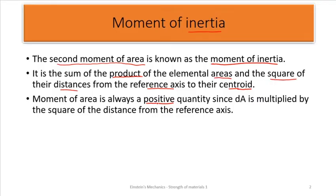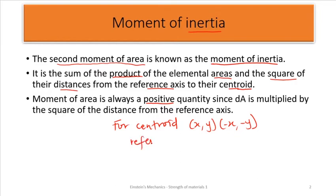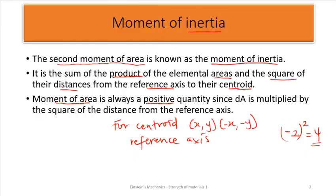The moment of area is always positive — keep that in mind. For the centroid we can have both negative and positive values depending on the reference axis direction. But for the moment of area it is always positive, because we are looking at the square of the distances from the reference axis to the centroid. Even if the distance is negative two, once we square it we get positive four, so everything for moment of area ends up positive.